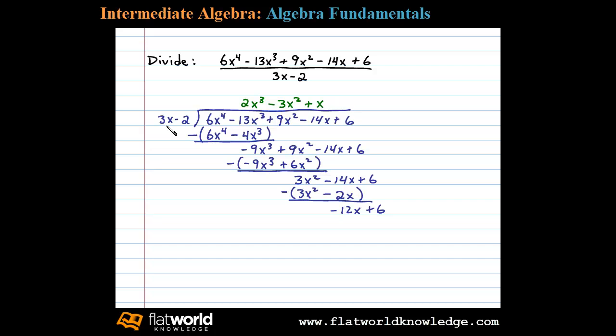Now we ask what times 3x is equal to negative 12x. We choose negative 4. Negative 4 times 3x is negative 12x. Negative 4 times negative 2 is plus 8. After then we subtract, and that leaves us with 6 minus 8 or negative 2 as the remainder. So we can add a term with negative 2 divided by the divisor, in this case 3x minus 2.